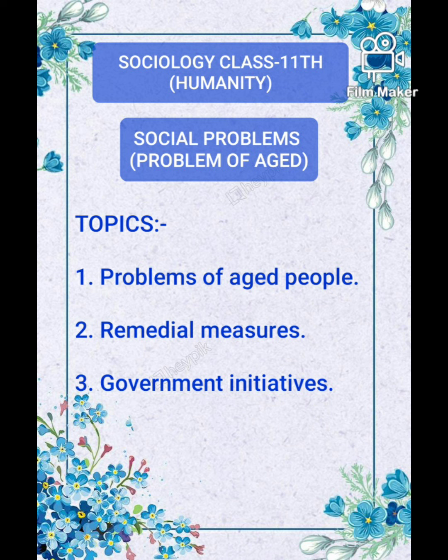Several initiatives including the creation of old age homes and awareness campaigns have become part of the national programme. The National Policy on Older Persons was announced in January 1999 to ensure the well-being of older persons. The Maintenance and Welfare of Parents and Senior Citizens Act was enacted in December 2007, with key features including making maintenance of parents and senior citizens by children and relatives obligatory and justiciable through tribunals.